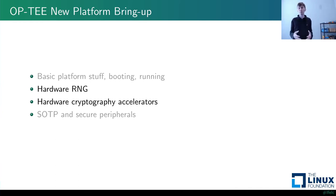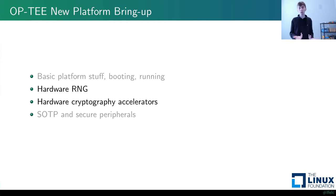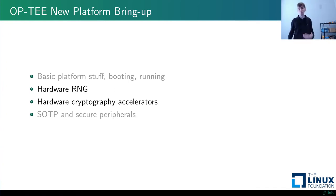Examples of secure peripherals you might want include a smart card reader — you may want to exchange data with it without trusting the Linux kernel — or a secure keypad reader where a user enters a PIN for validation, but you can't trust the kernel with seeing that PIN. Both of those are beyond our scope; we want to focus on just hardware accelerator enablement.